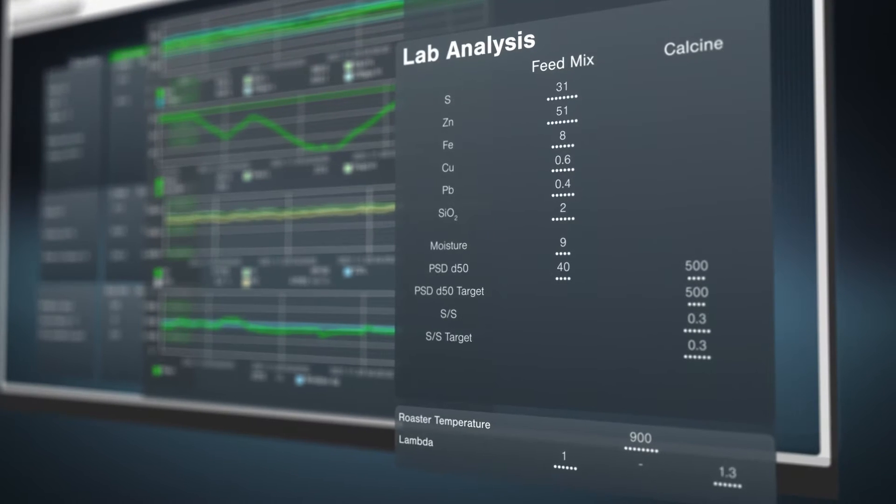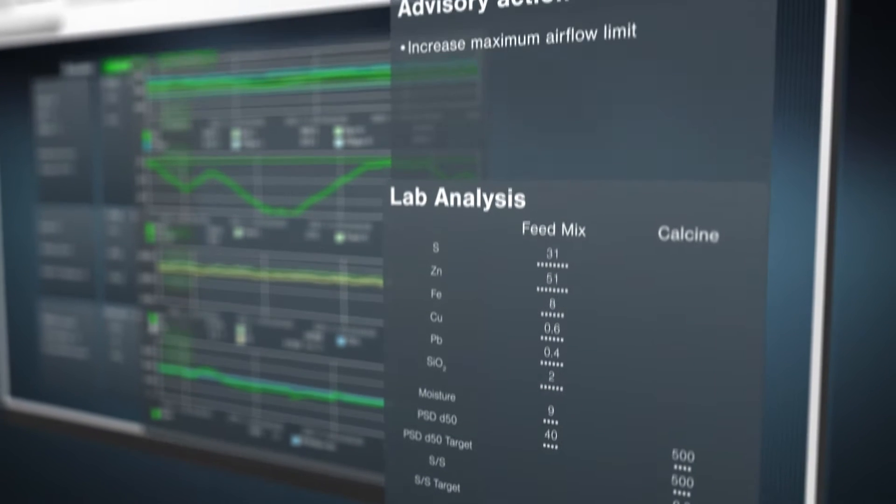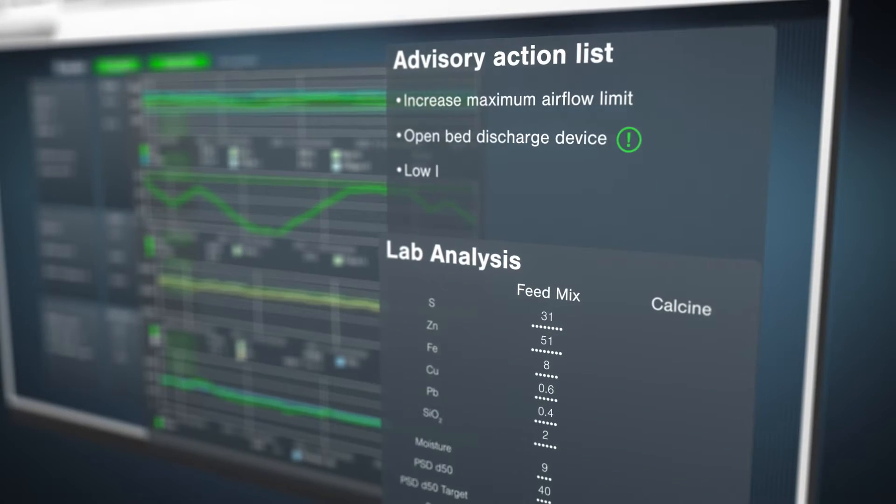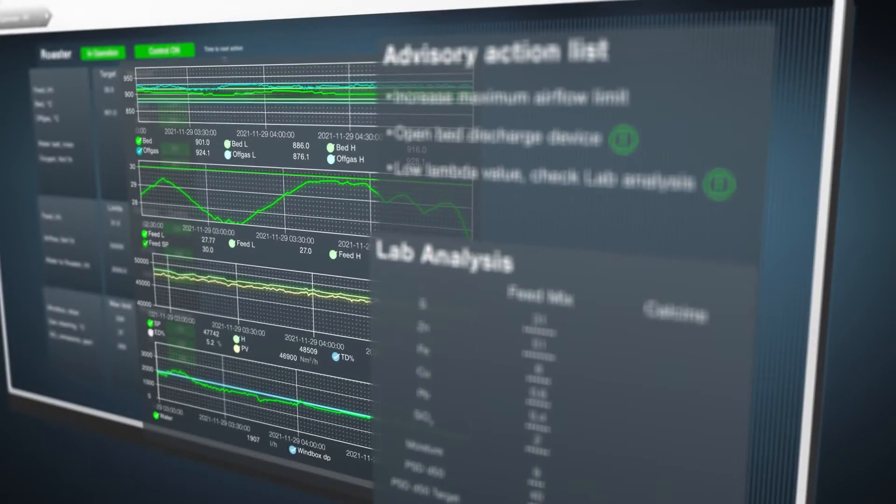Feed material characteristics and product quality can be assessed directly in the Fluid Bed Optimizer. Beside active controls, the advisor section gives automated recommendations to the control room operators for running the process more efficiently.